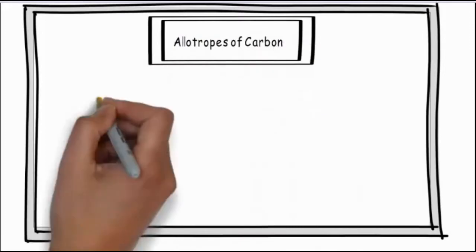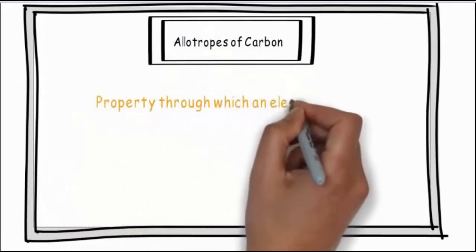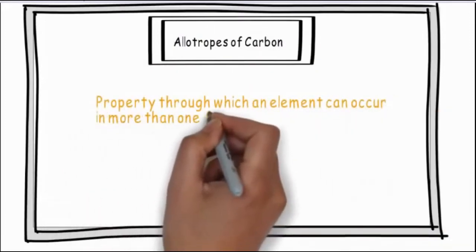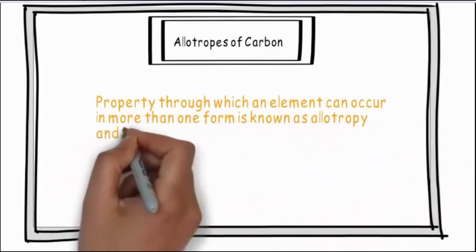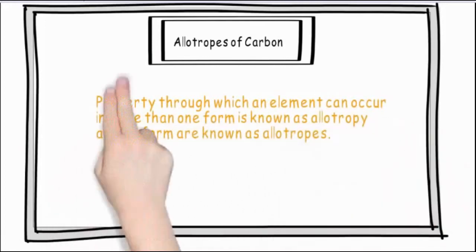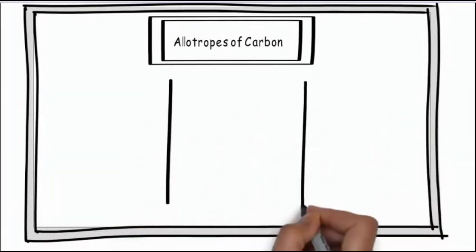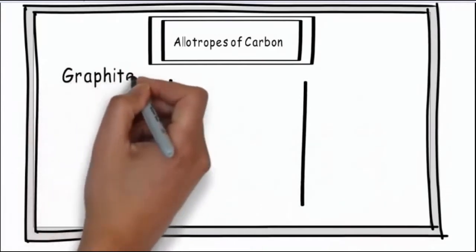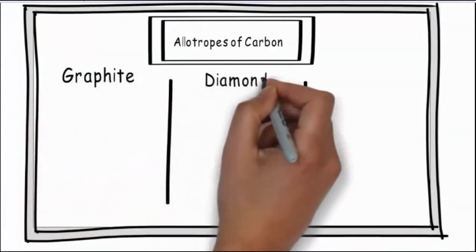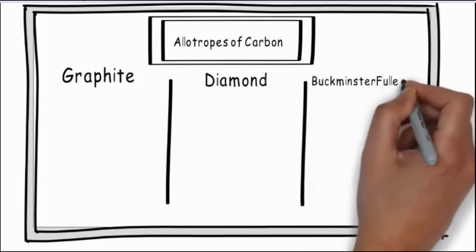Allotropes. The property due to which an element exists in nature in 2 or more than 2 forms is known as allotropy, and its forms are known as allotropes. Carbon has 3 allotropes: Graphite, Diamond, and Buckminster Fullerene.